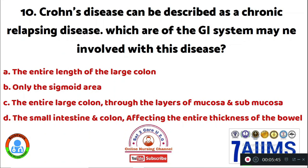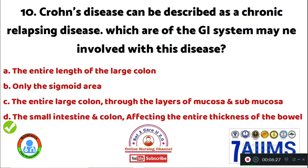Question 10: Crohn's disease can be described as a chronic relapsing disease. Which area of the GI system may be involved? Option A: the entire length of the large colon. Option B: only the sigmoid area. Option C: the entire large colon through the layers of mucosa and submucosa. Option D: the small intestine and colon affecting the entire thickness of the bowel. The right answer is Option D: the small intestine, specifically with the colon, affecting the entire thickness of the bowel.